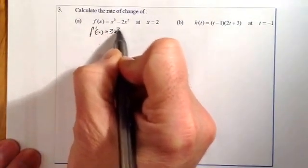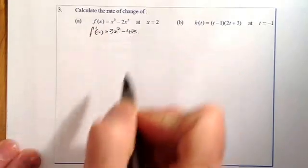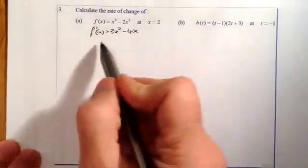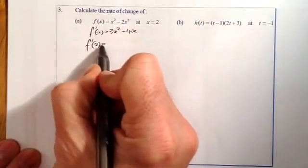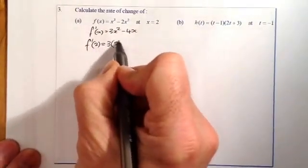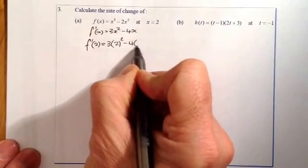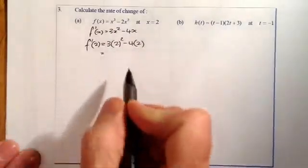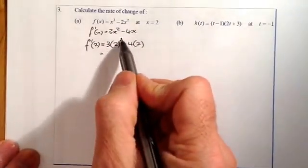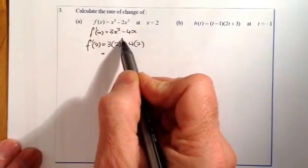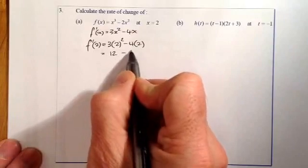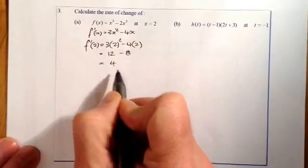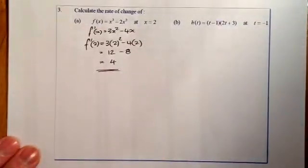So that's going to be 3x squared, that's going to be minus 4x. What I'm now going to do is substitute the 2 into this function. So f dash 2, I'm going to put the 2 in wherever we see x. I'll multiply these parts out. That's going to give me 4, 4 times 3 is going to give me 12, 12 minus 8 will give me an answer of 4. So the rate of change is 4.